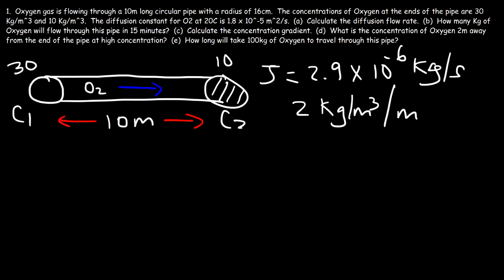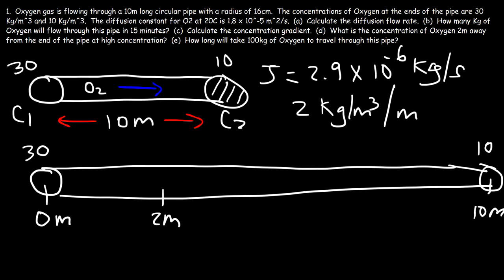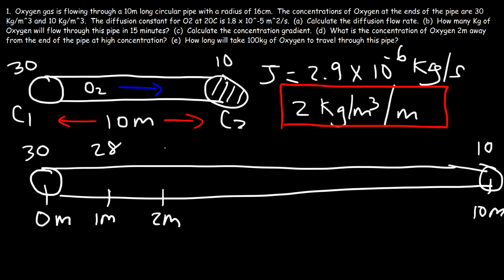For Part D, we want the concentration of oxygen 2 meters from the high-concentration end of the pipe. Visualizing the pipe with concentration 30 on the left at position 0 and concentration 10 on the right at 10 meters: the concentration gradient tells us the concentration drops by 2 kilograms per cubic meter every meter. So 1 meter from the high end it is 28, and 2 meters away it is 26. That is the answer for Part D.